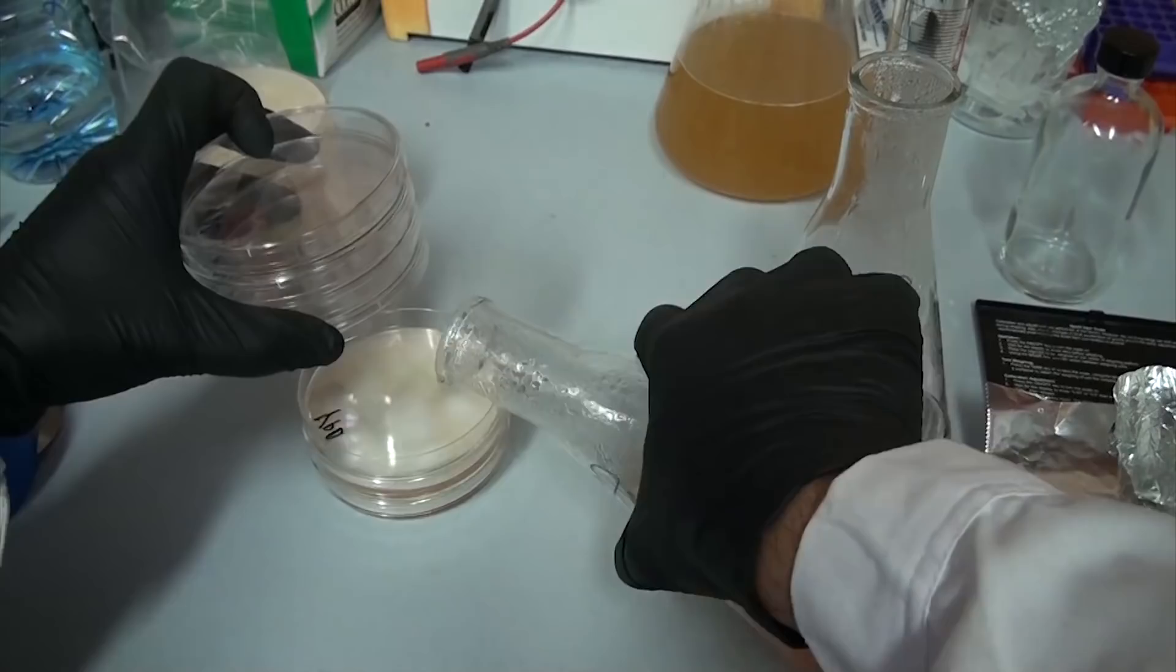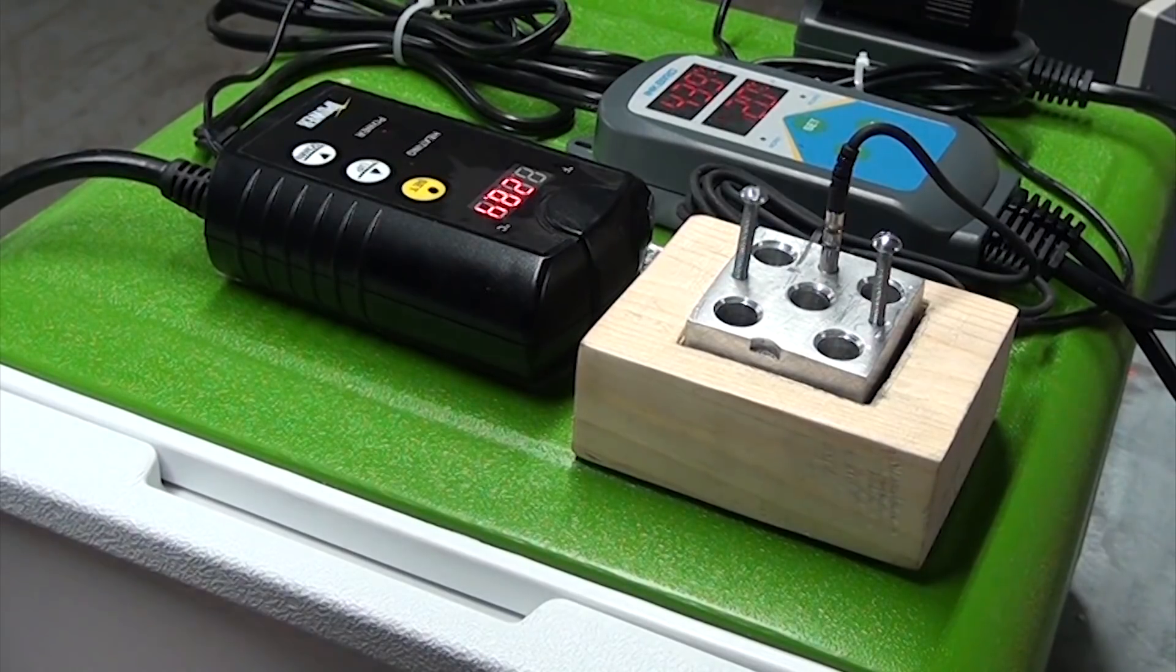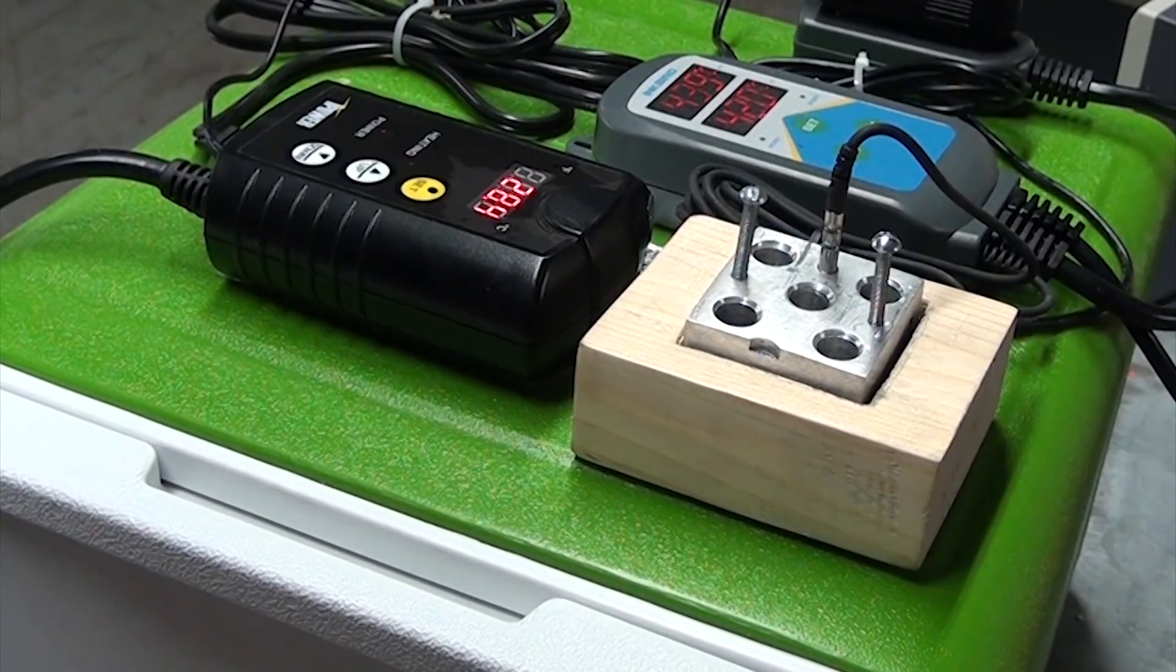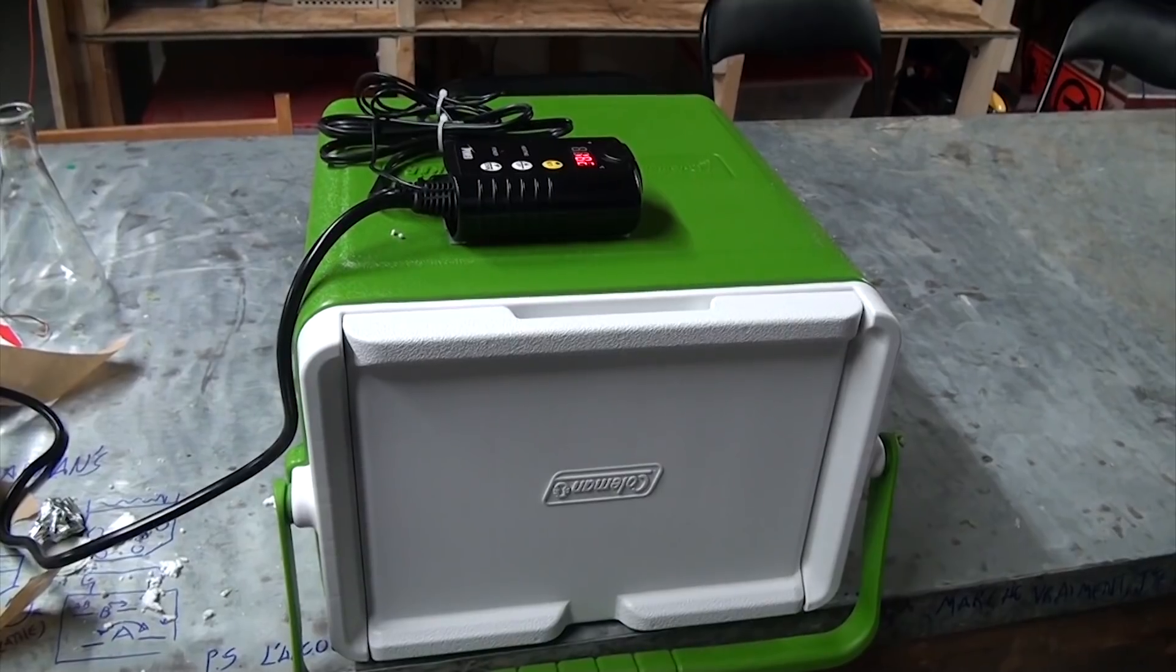Since we'll be doing an immense amount of genetic engineering and microbiology, there's three of these that we'll need, and all are relatively easy to build. Today we're going to be talking about two of them and put one of each together. The first is an incubator, and the second is a heat block.